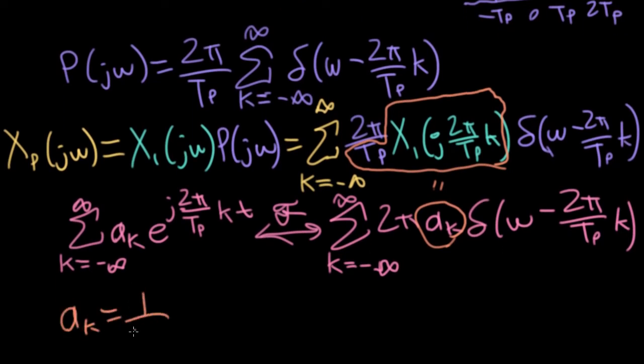All right, a k equal 1 over t sub p, big x1, j 2 pi over t p times k. If you're trying to find Fourier series coefficients of some weird waveform, and it looks very painful.